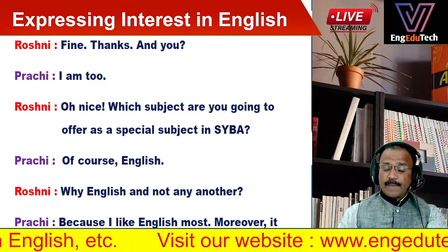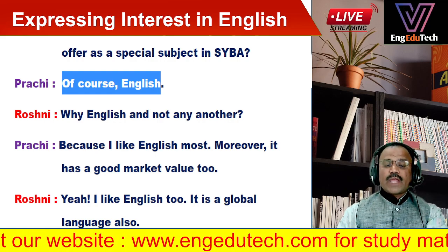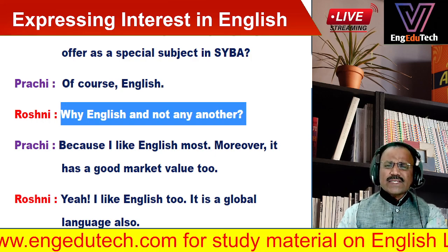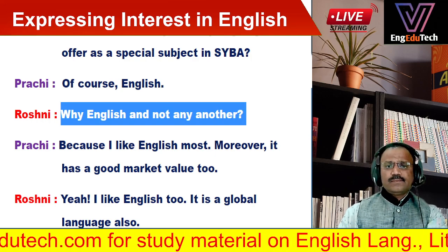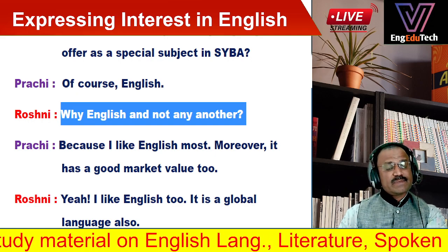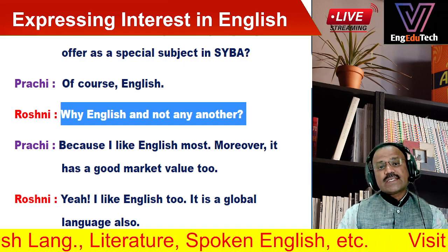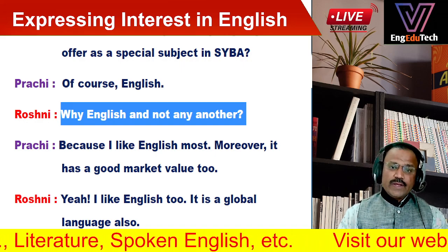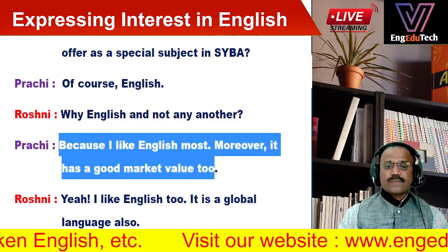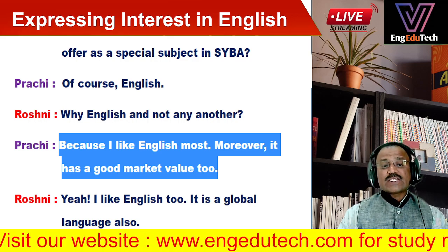Prachi says, 'Of course, English.' Roshni asks, 'Why English and not any other subject?' — meaning why are you offering English as a special subject and not any other subject? This is also an example of informal communication.